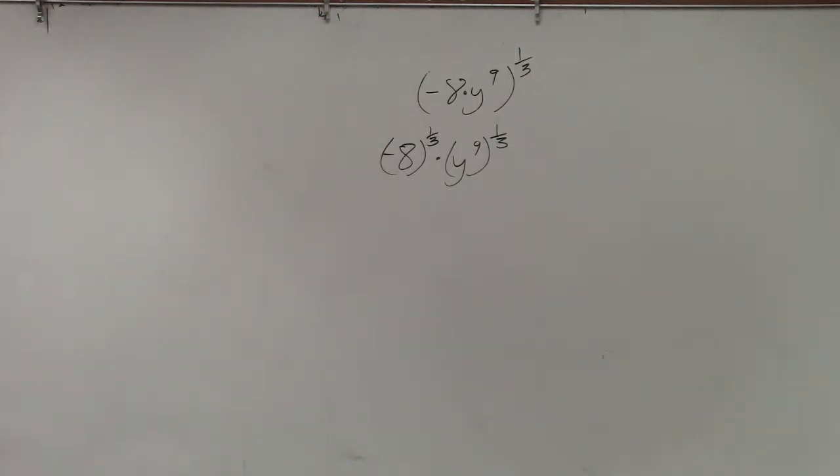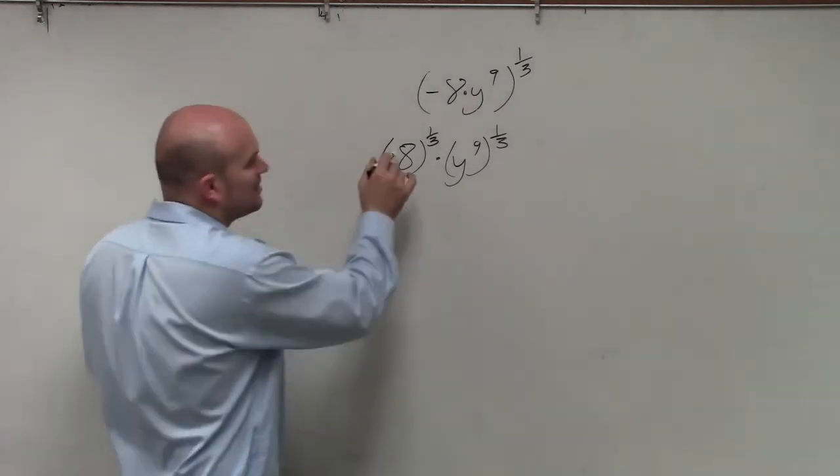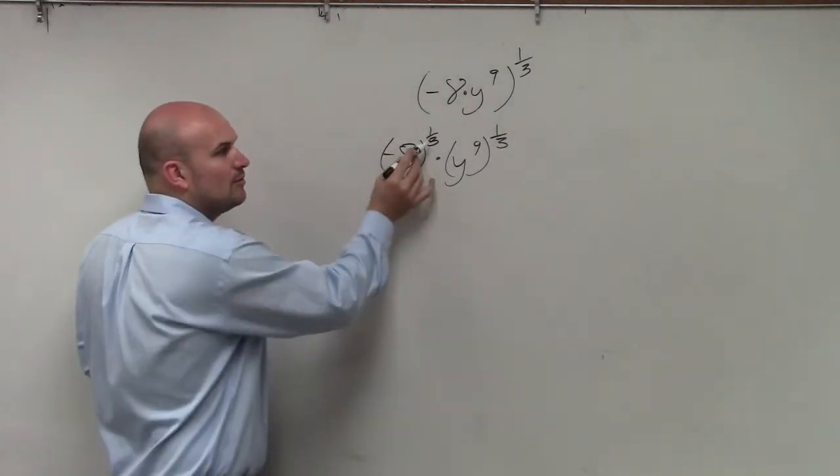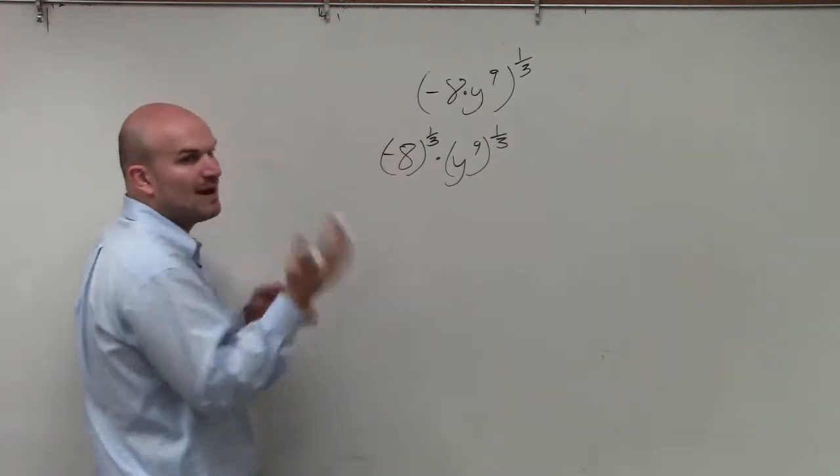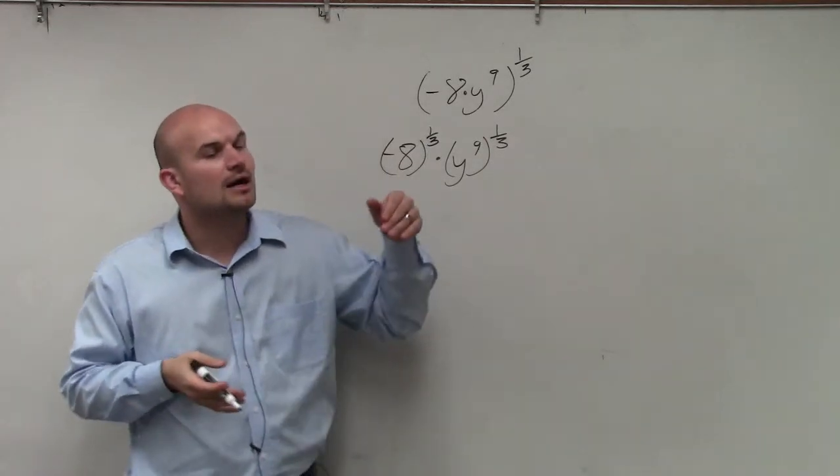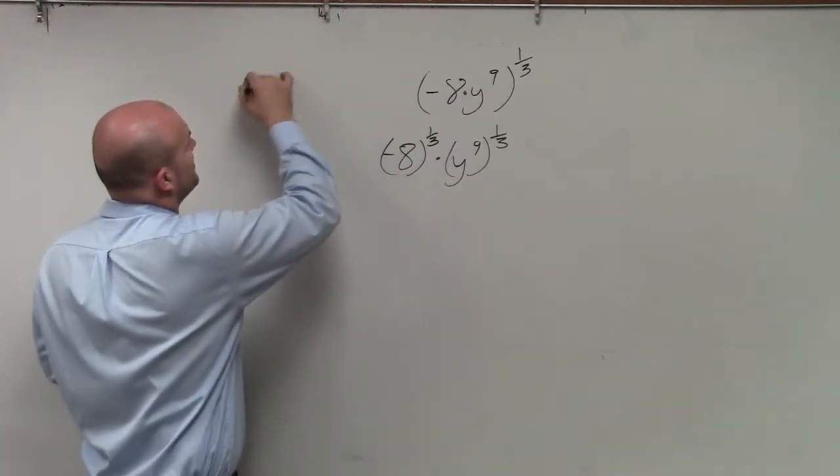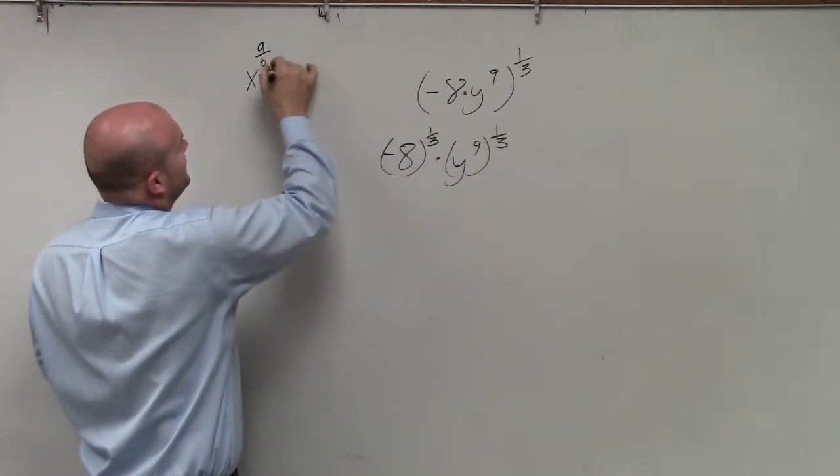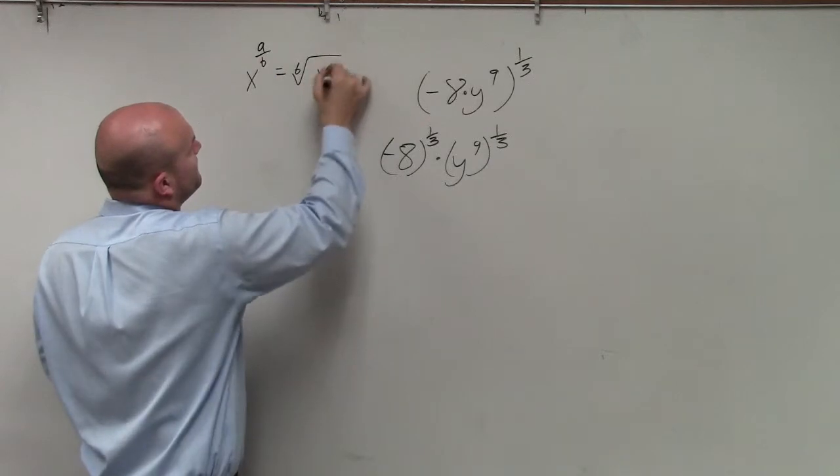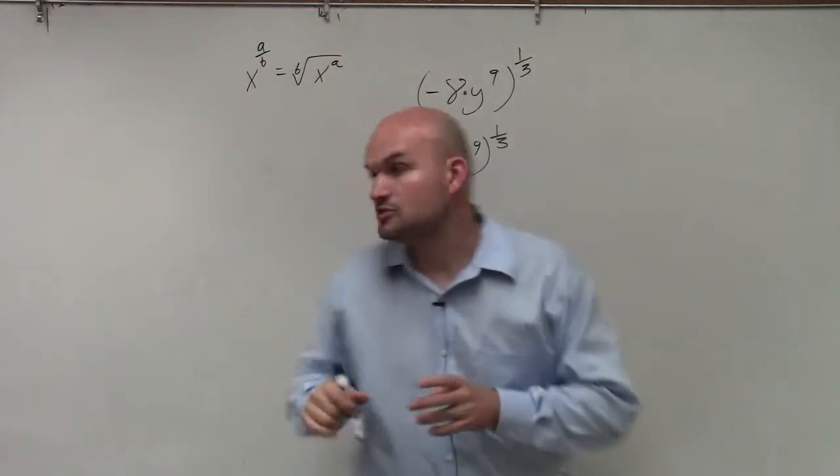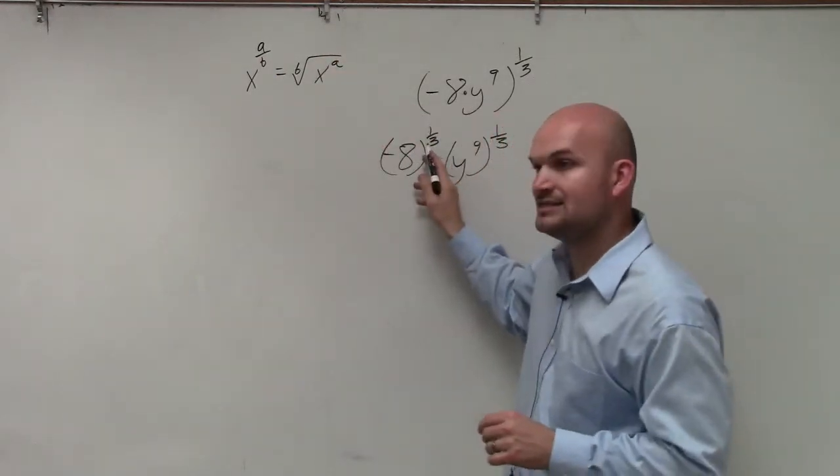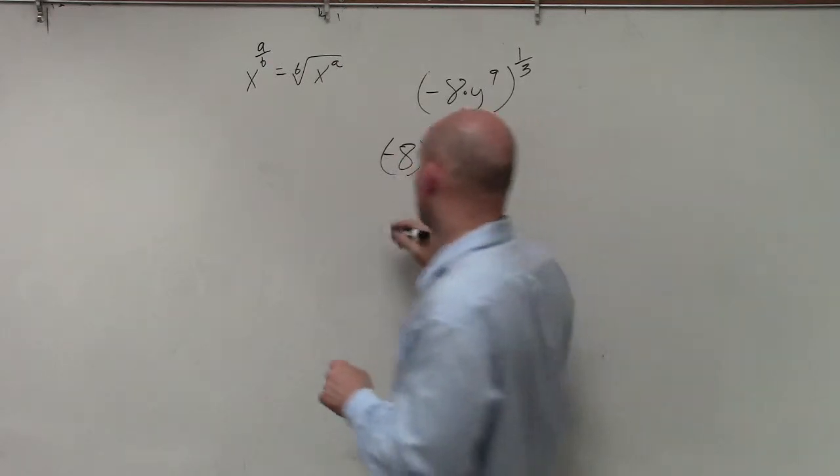The next thing is we now need to remember, what does rational exponents mean? What is the rule for converting from a rational exponent to a radical expression? If you guys remember, if it's x to the a over b, that's equal to the b root of x to the a. So therefore, 3 is now going to be my index, and 1 is going to be my power.